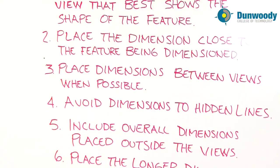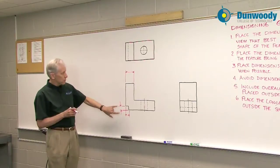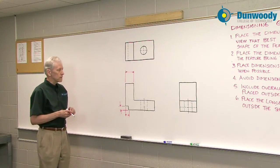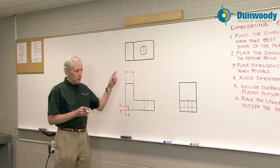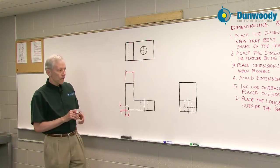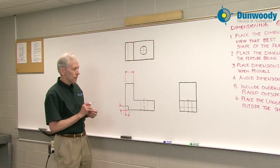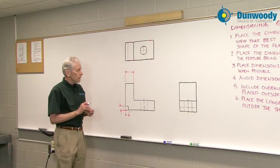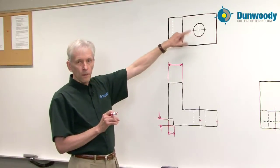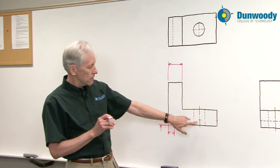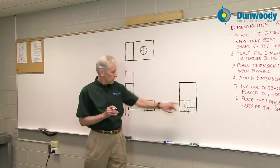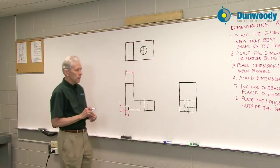Avoid dimensions to hidden lines. That's one reason I didn't even consider putting these dimensions on the other views where that feature is shown in hidden lines. Another feature that I have to dimension on this sketch that's shown in hidden lines is the hole that goes through the part. It's shown as a circle on the top view. It's shown as a pair of hidden lines with the center line on the front view and the right side view.